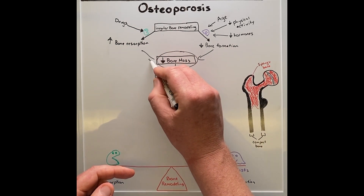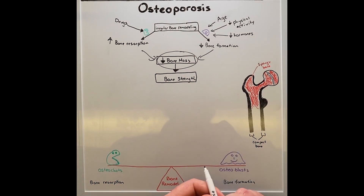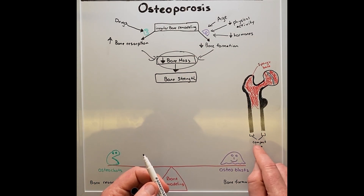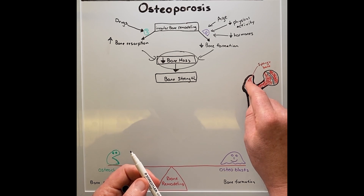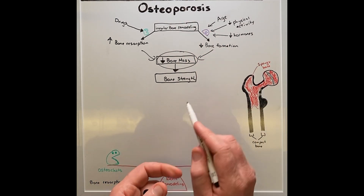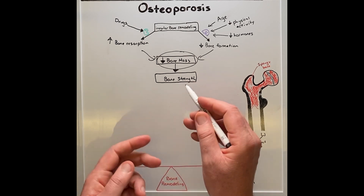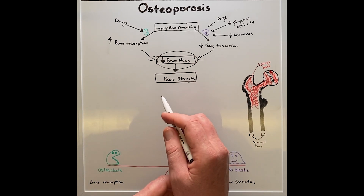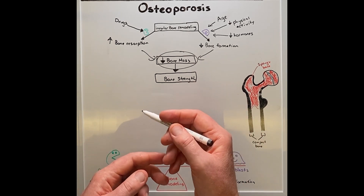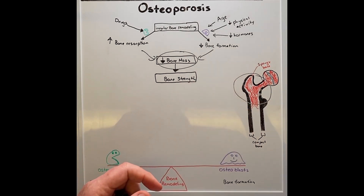Together, these will reduce bone mass, which at the bone level can be seen by a thinning in the compact bone and greater or larger holes in the spongy bone, which is the porosis. This will decrease bone strength, which increases the likelihood of fractures, such as in the vertebra, the neck of the femur, and the wrist.